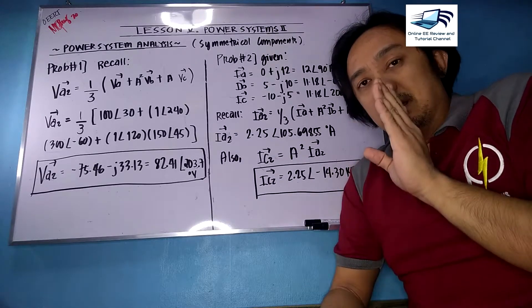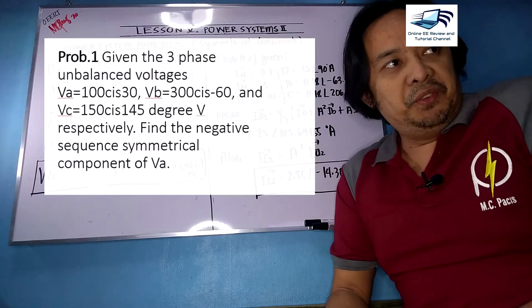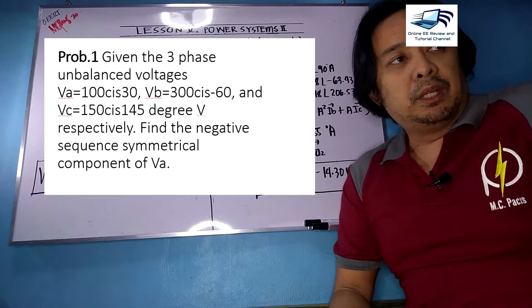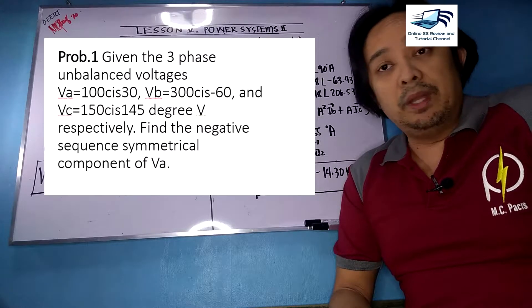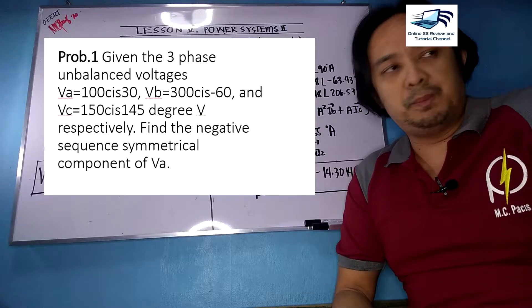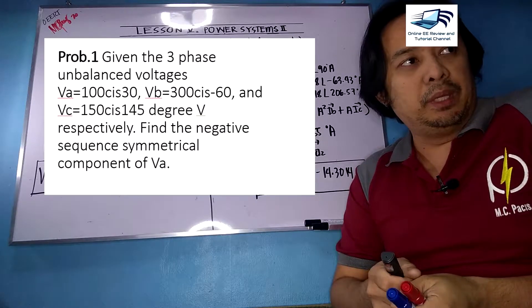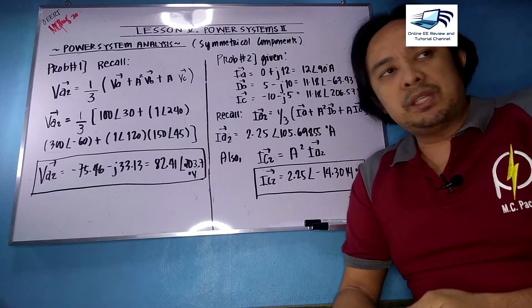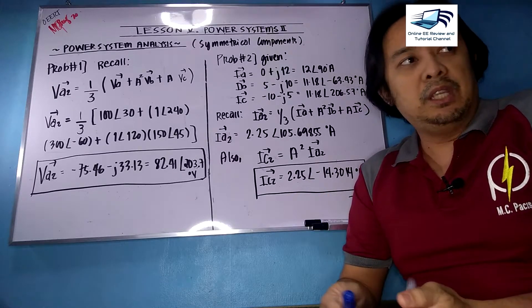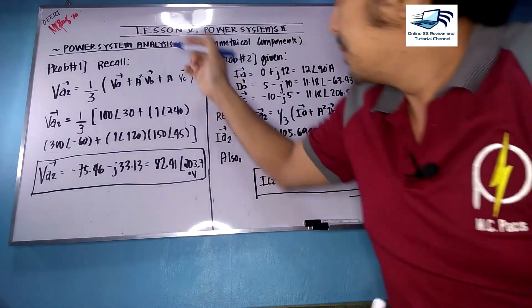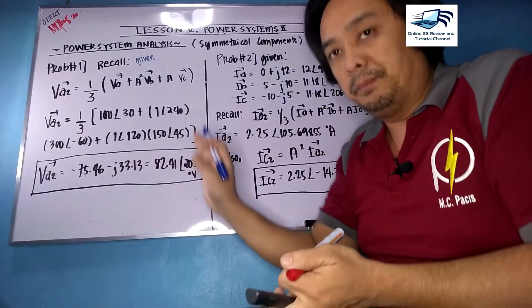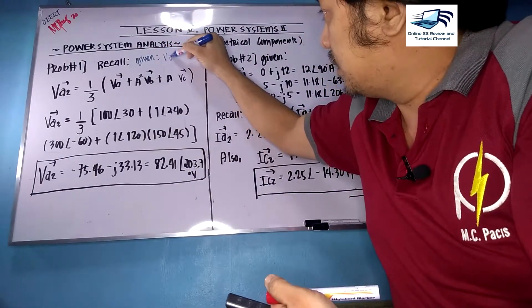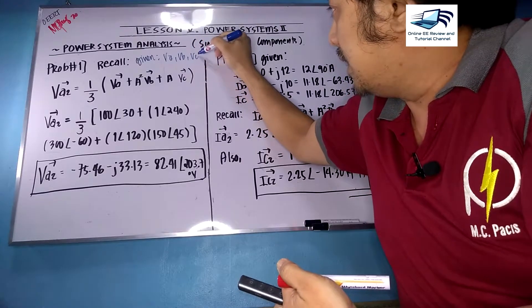Let us solve problems 1 and 2. First, let us read the problem. Given three-phase unbalanced voltages: VA = 100∠30°, VB = 300∠−60°, and VC = 150∠145° volts respectively. You need to find the negative sequence component of the phase voltage VA. To solve this problem, we must recall some things — instead of current, as mentioned, we can use voltage as well. The given here is the voltages VA, VB, and VC.